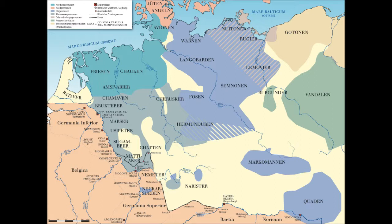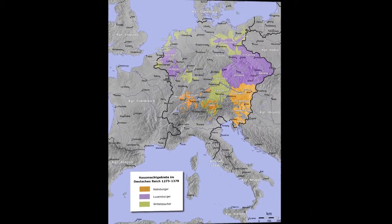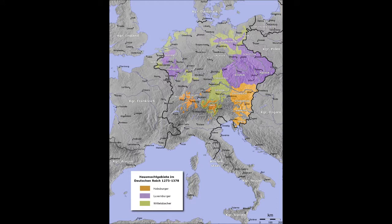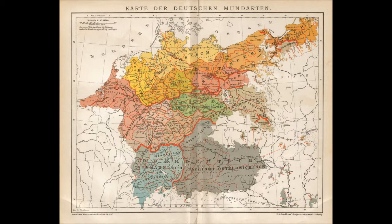Not until the 15th century was it used in singular as Deutschland — Germany. Here we see a map of this time, of the Holy Roman Empire of the German nation, which is neither Roman nor German and not even an empire.